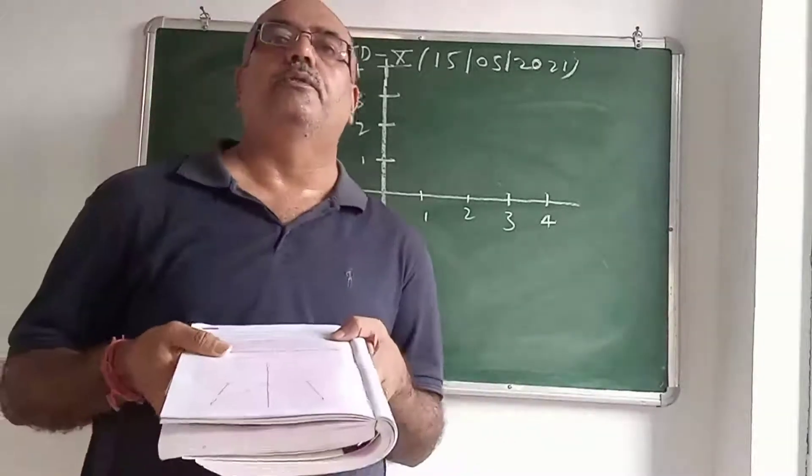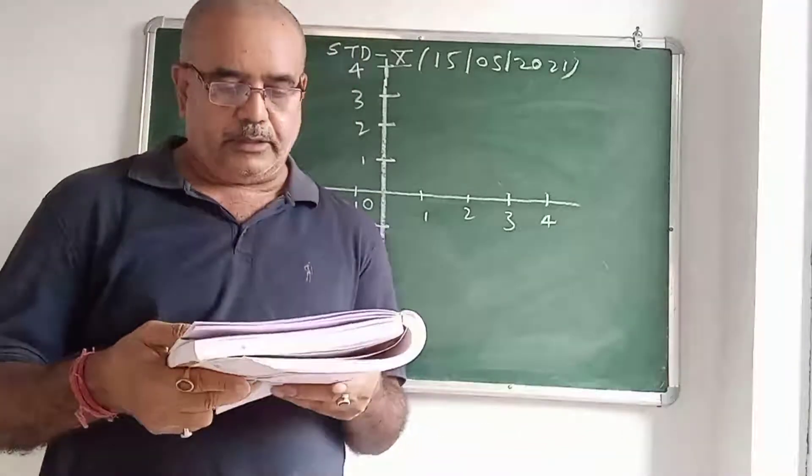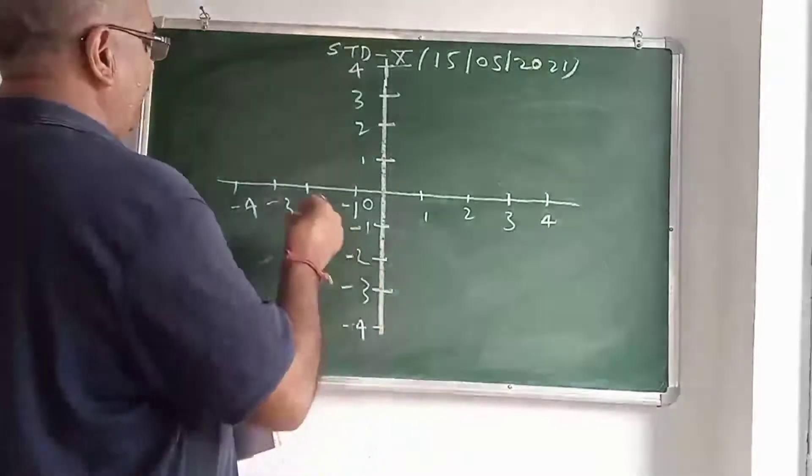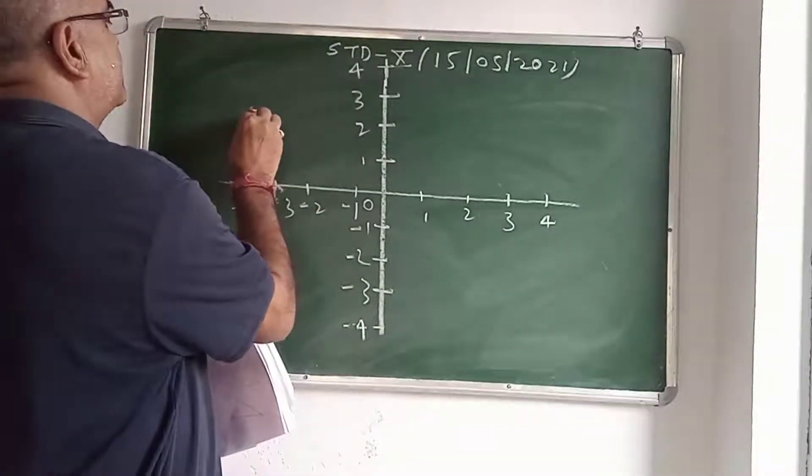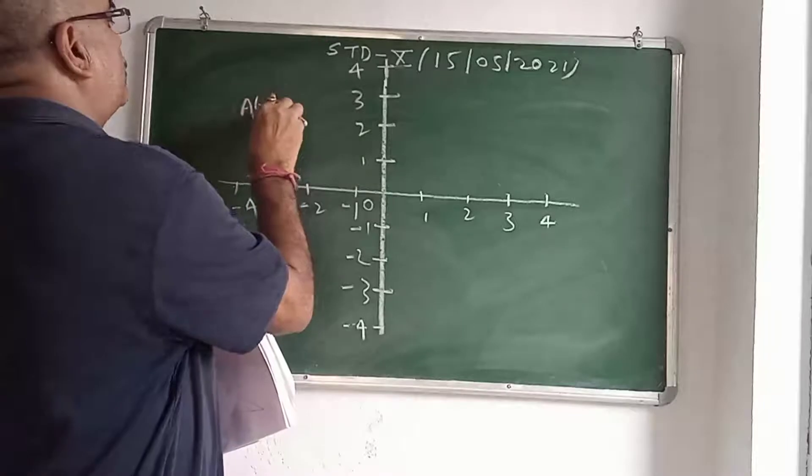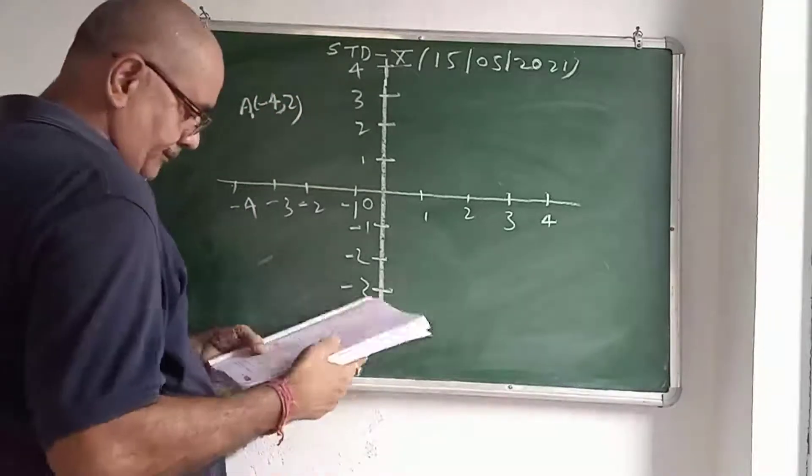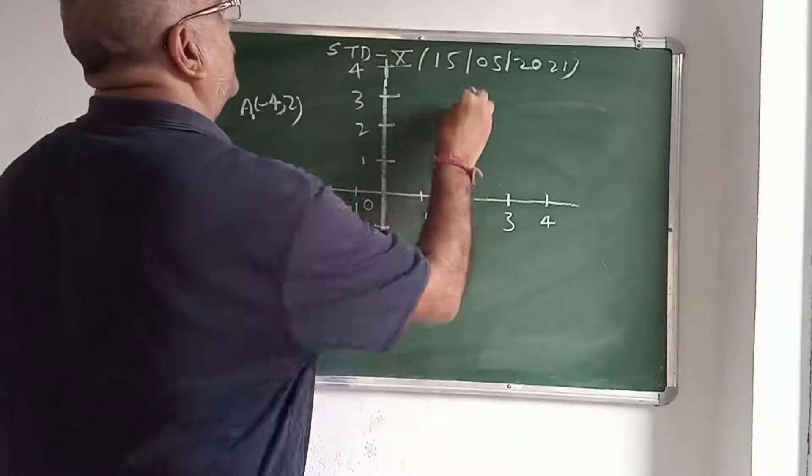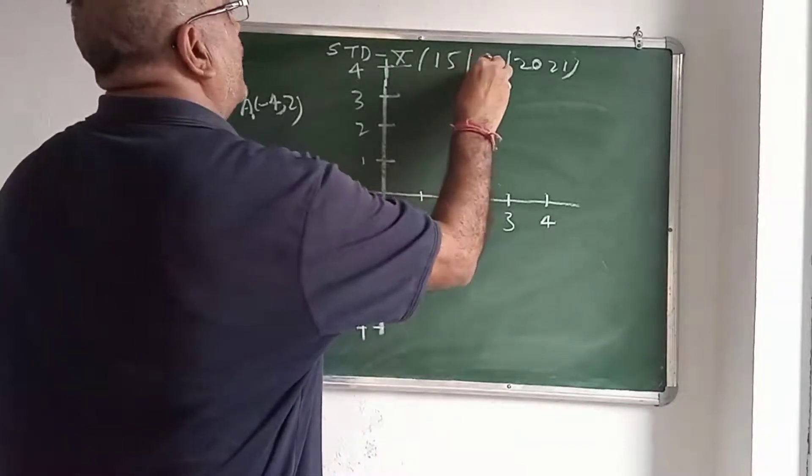First of all we have to locate the given point A(-4, 2). A minus 4, 2. This is the point A, minus 4, 2. B is 2, 4. B is 2, 4. This is the point B.